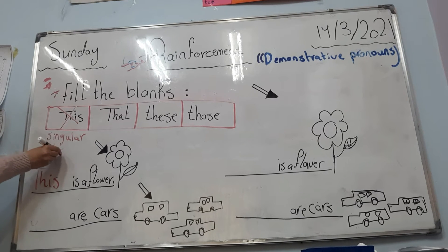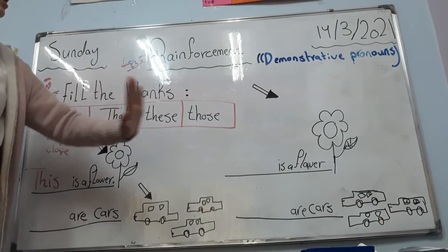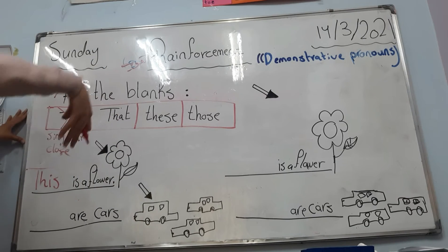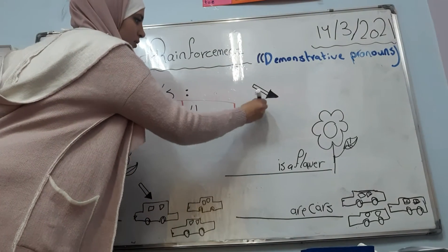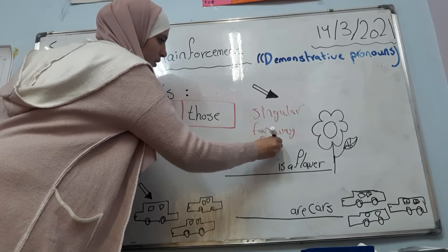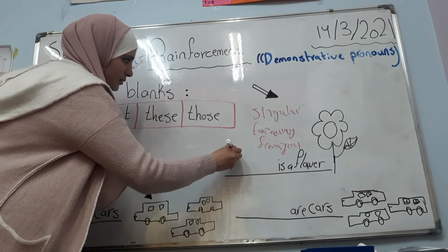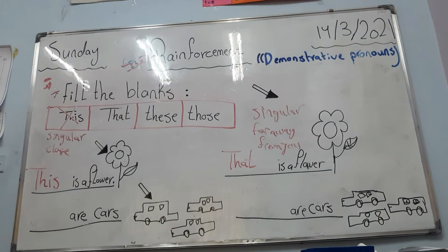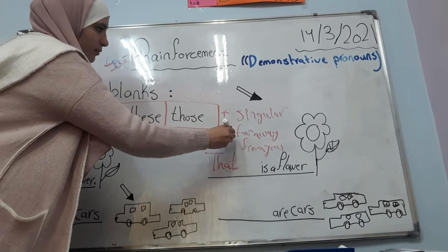Now let's go to the next flower. You have one flower and it's far from you, far away. So we must use 'that'. 'That flower' — we say 'that is a flower' — because it's singular and far away from you.